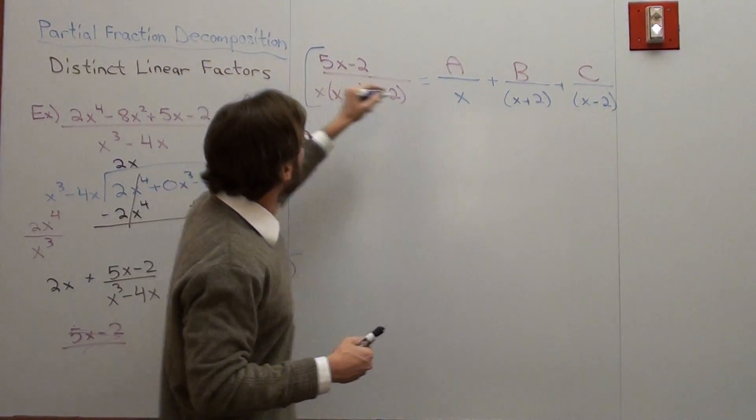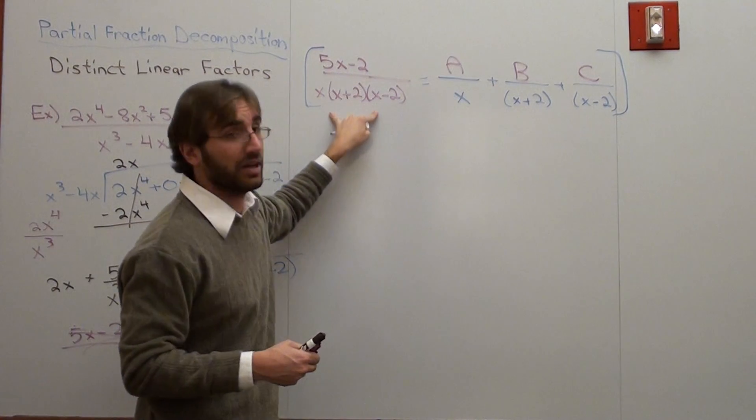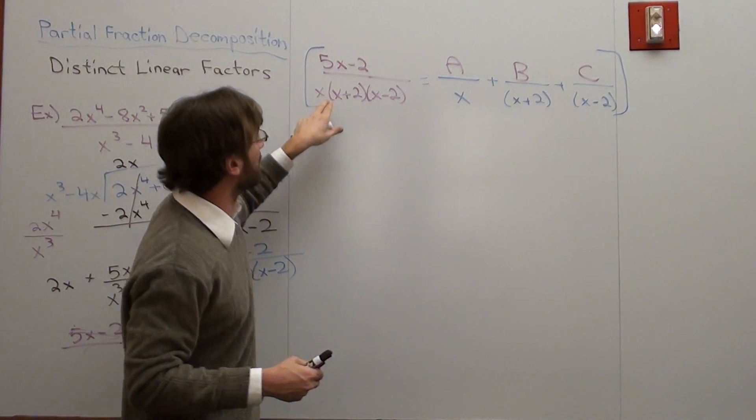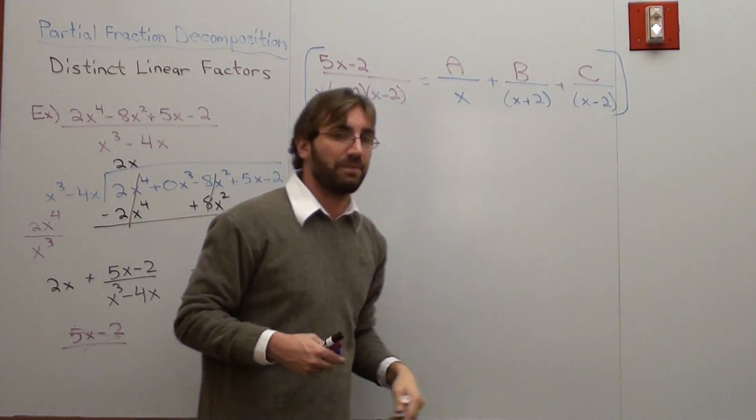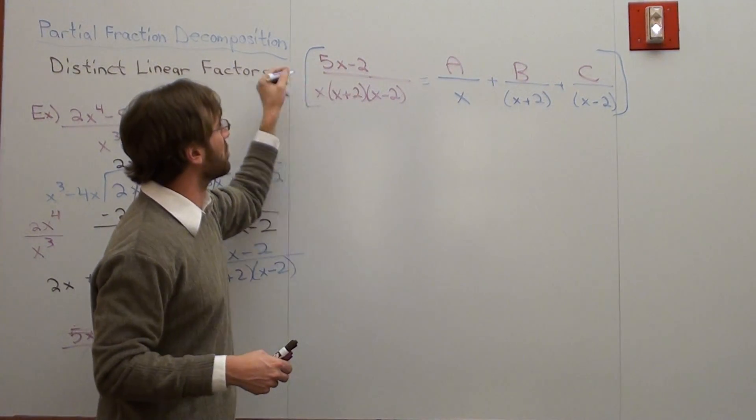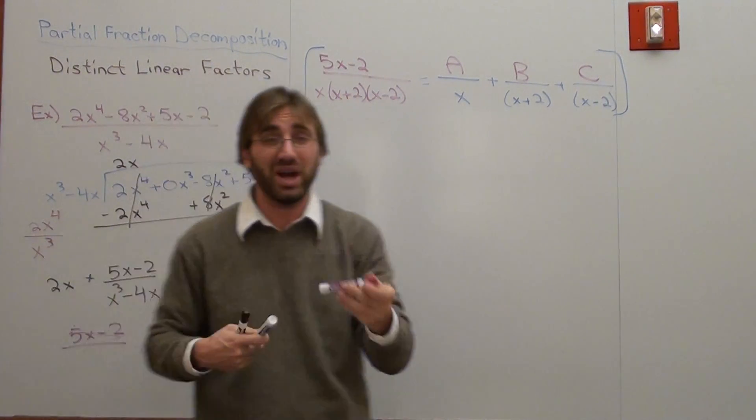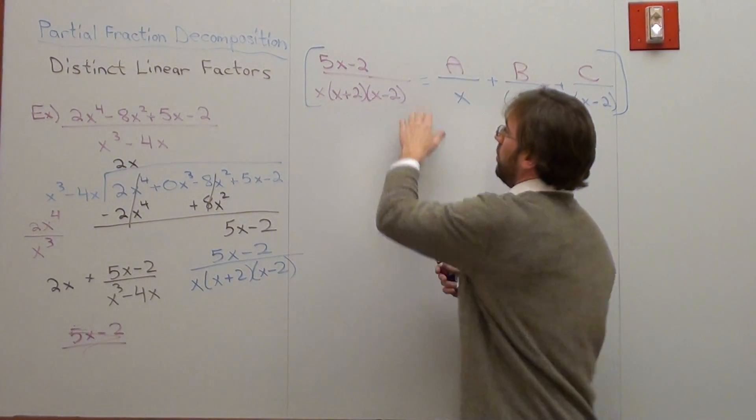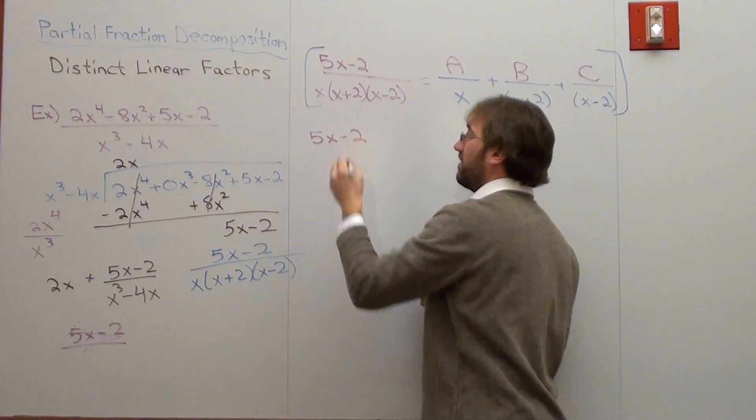So what I'm going to do is I'm going to multiply this whole equation by this denominator. So this term is going to be multiplied by x, x plus 2, x minus 2 on the top. This one, this one, and this one as well. And it's x, x plus 2, x minus 2 over 1. That's something that students usually get wrong. Now when I go ahead and do that, what I get is this. Well, all of these are going to cancel. I'm going to be left with 5x subtracted by 2.